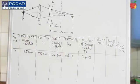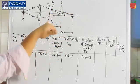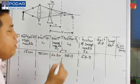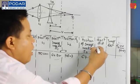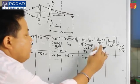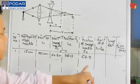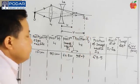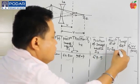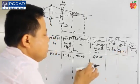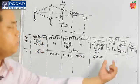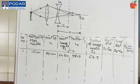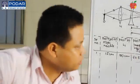Your object distance u is the distance between I1 and L2, so u = I1 − L2. Your image distance v is the distance between L2 and I2, so v = I2 − L2. From these two values, using the formula f = uv / (u − v), we calculate the focal length of the concave lens. You can then repeat the readings for additional observations.